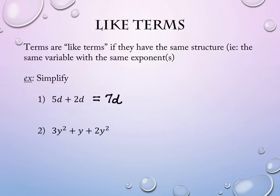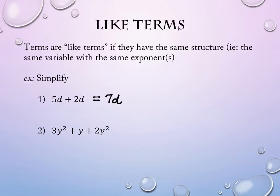On number 2, we see some terms that are y and some that are y squared. y and y squared are not alike, so you cannot combine y squared and y and make it y cubed or something like that — we're just adding things together. These two are alike because they're both y squared, but the other term is not.